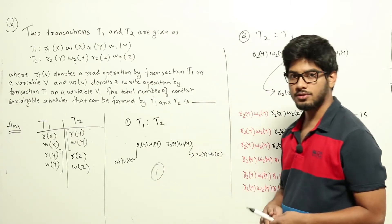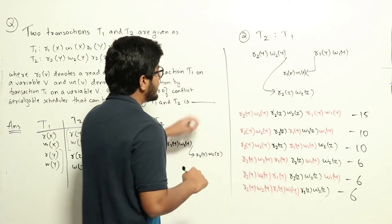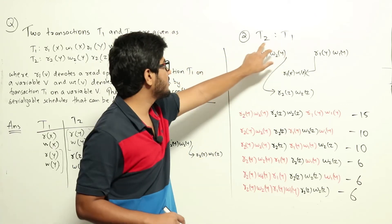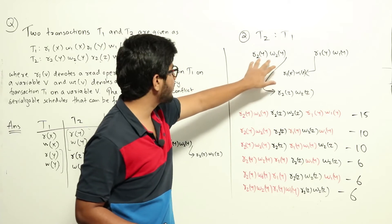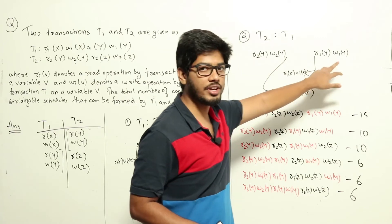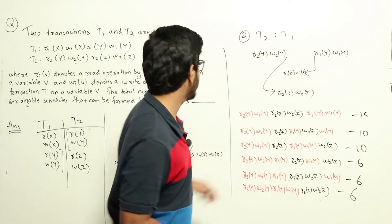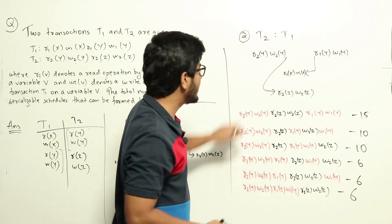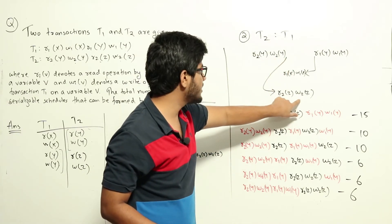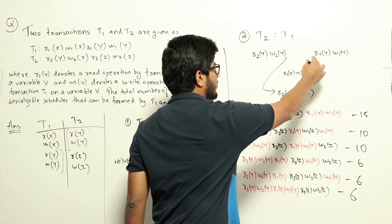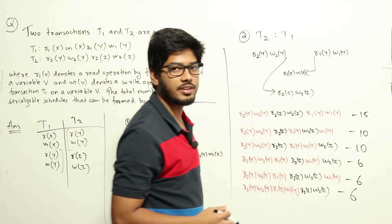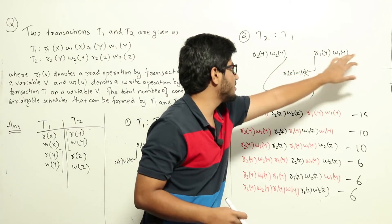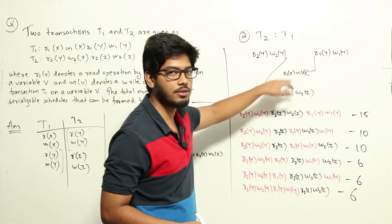Now let's look at the serial schedule T2→T1. For a schedule to be conflict serializable to T2→T1, R2(Y) and W2(Y) must appear before R1(Y) and W1(Y). After R2(Y)/W2(Y), R2(Z) and W2(Z) must follow, and after R1(Y)/W1(Y), R1(X) and W1(X) must appear. We'll first assign R2(Z) and W2(Z) to available gaps, then R1(X) and W1(X), and count all possibilities.